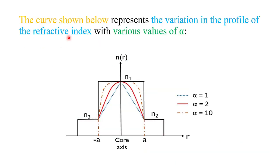Now let us talk about alpha. Alpha is basically a profile parameter that decides the refractive index profile of a graded index fiber. For different values of alpha, the shape of the refractive index profile of the core is different. In the diagram, the range from −a to +a is the diameter of the core; r is the radial distance from the center axis; n2 is the constant cladding refractive index; n1 is the continuously varying core refractive index; and nr is the refractive index profile.